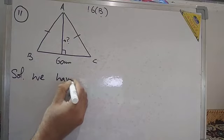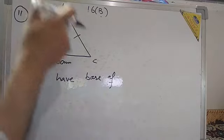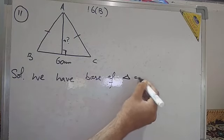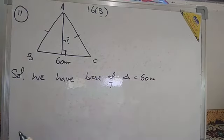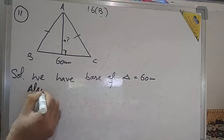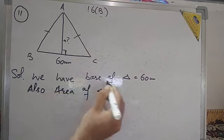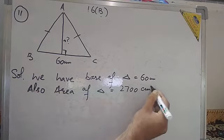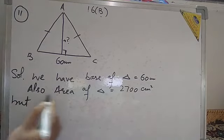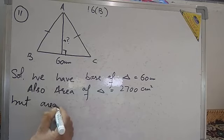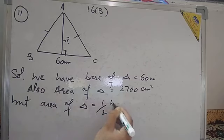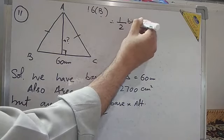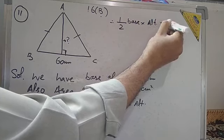In the solution: the side on which the altitude falls is called the base. The base of the triangle is equal to 60 cm. Also, the area of the triangle is given as 2,700 square centimeters. The formula for area of a triangle is half of base into altitude. Therefore, half of base into altitude equals 2,700.